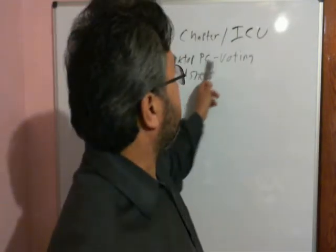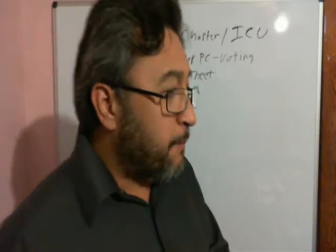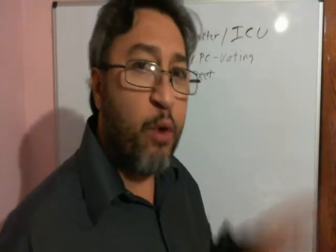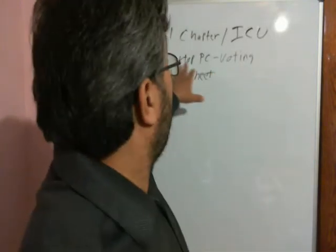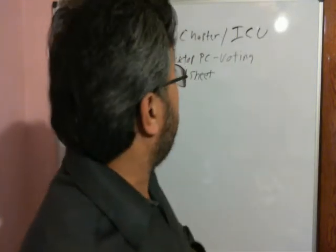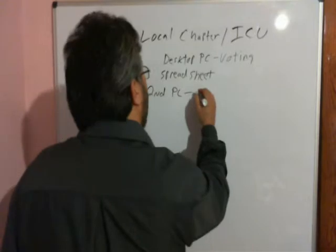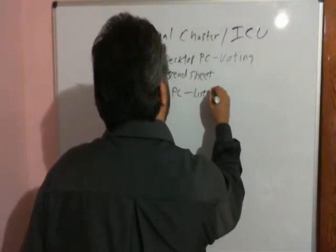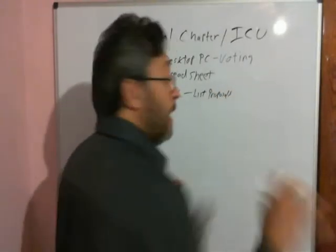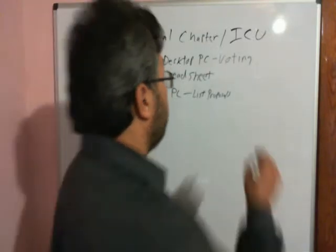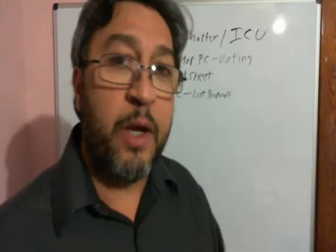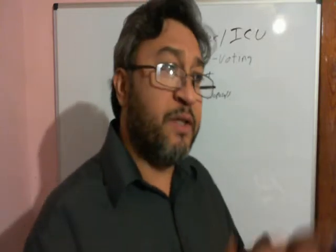The first PC will be the voting PC, where whatever proposals are entered — mainly the proposal number and the actual law. We'll probably have a second PC that will list all the proposals and the details about them. This is where the laws or proposals will be listed, and you should be able to go online and see them, pull them up, and look at all proposals within your community.